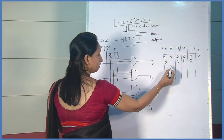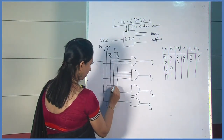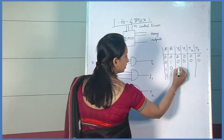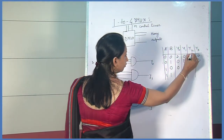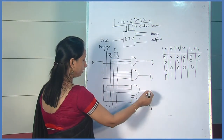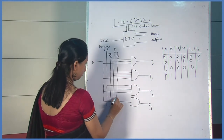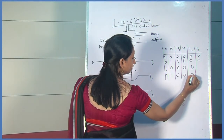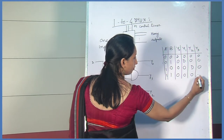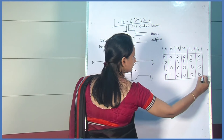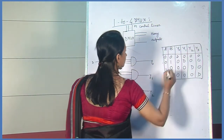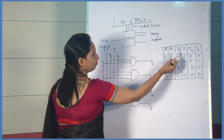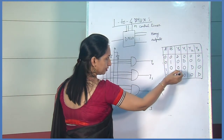For the third combination, 1,0 — A is 1 and B is 0 — the output is reflected on Y2, which is the output of the third AND gate. And for the last combination, 1,1, the output is reflected on Y3, and the other three outputs are 0. This is the truth table of the 1-to-4 demultiplexer. Whatever value is applied to the input is reflected on the selected output; for other cases it is 0.